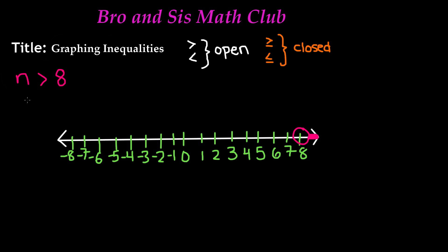Let's do another inequality. This time we have n is less than negative 1. I'm going to be graphing it on the same number line but color coding it so you know which one goes with which. First we have to find negative 1 on the number line. Less than is still going to be an open circle, so we're going to draw an open circle on negative 1. Then if we look at the point, it's going to the left, so we're going to shade to the left. That means the value of n could be anything less than negative 1 — it could go on for infinity because numbers never end.